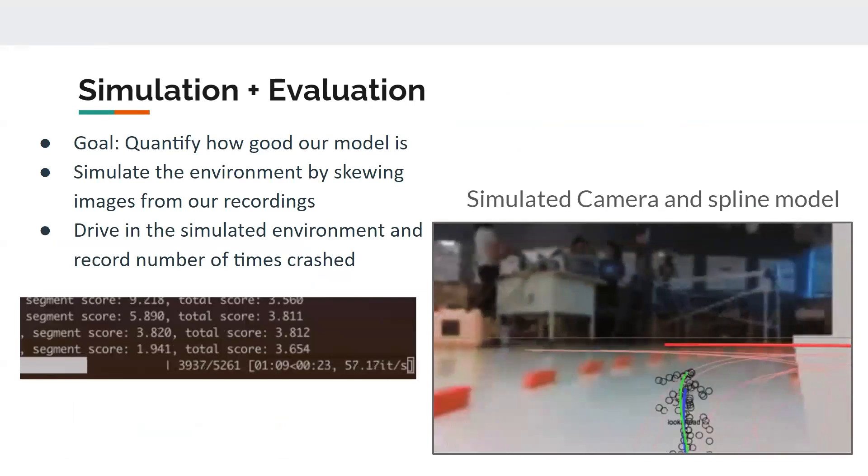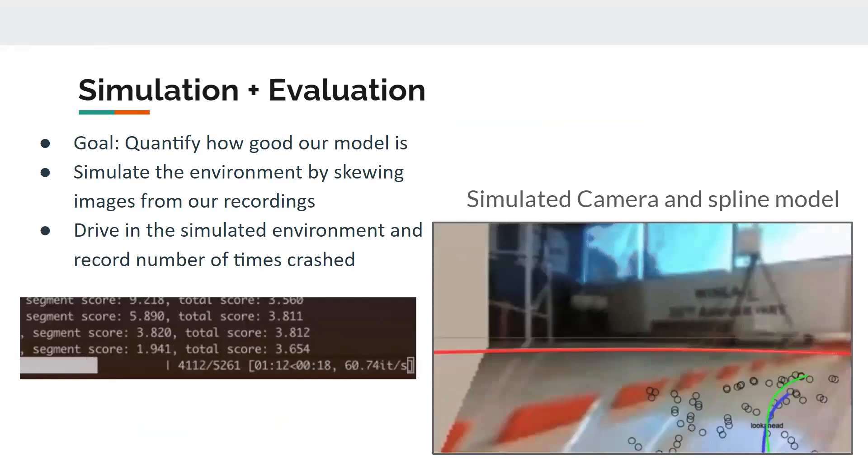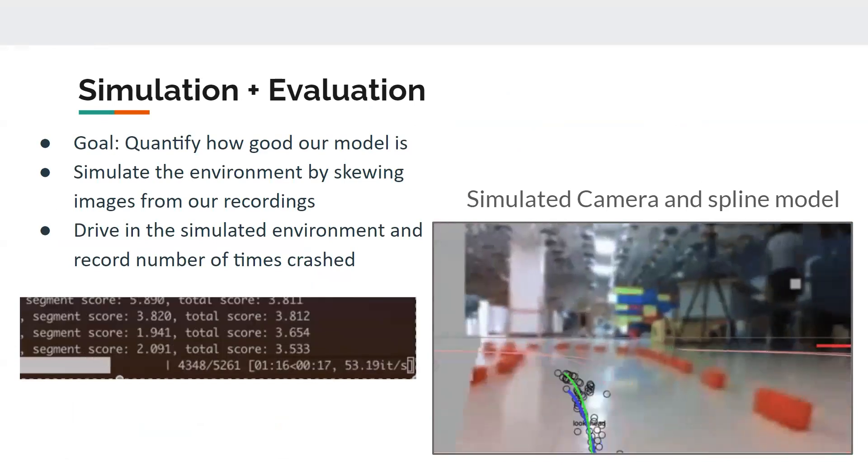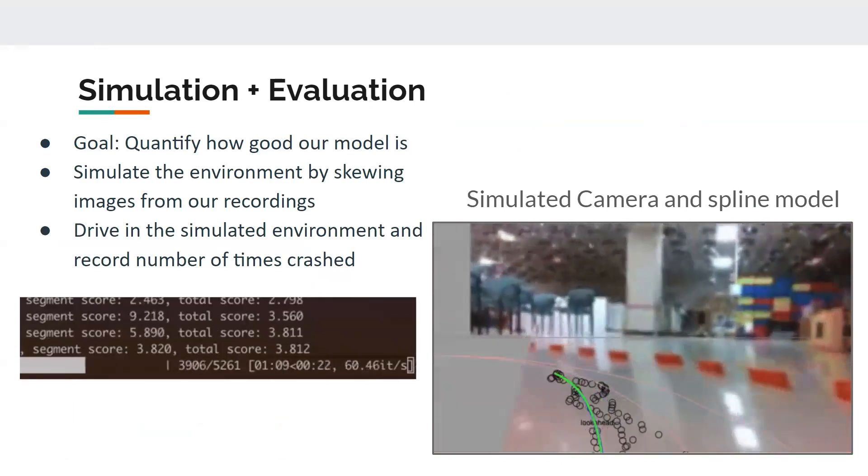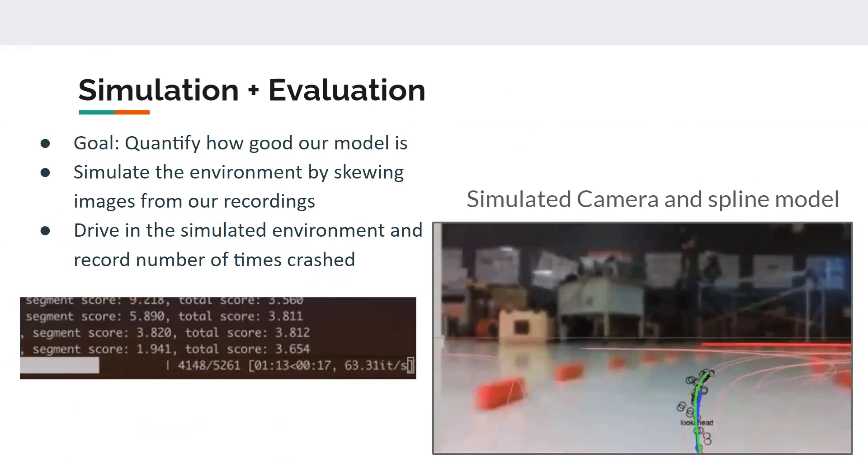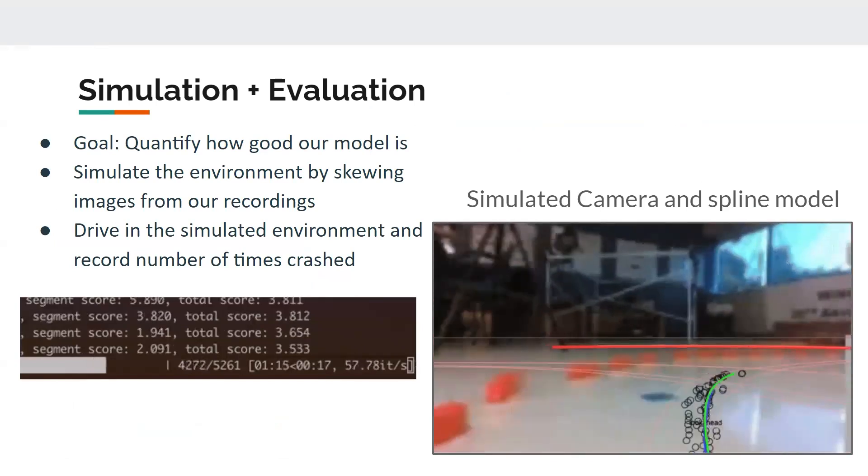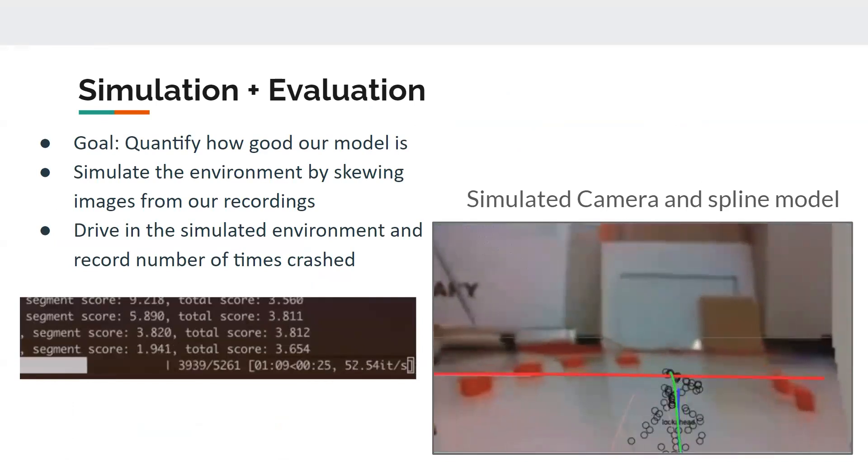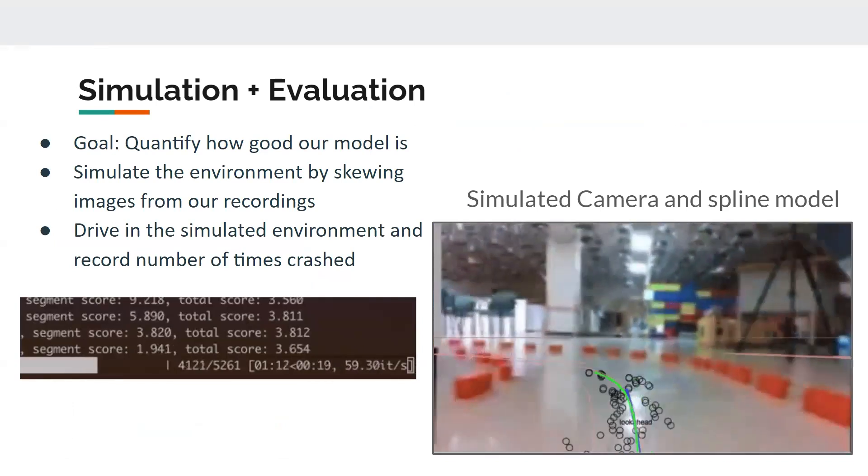And with this skewing, you might have seen this GIF before. Basically, by using the skewing, you can create a simulation where you can drive the model in a simulated environment and simulate what it would see from its position based on the previous recording and by skewing it. And by doing this, we can record our results and see how many times it would crash in the real world without actually having to have it crash in real life.